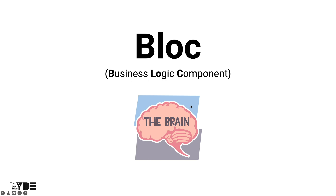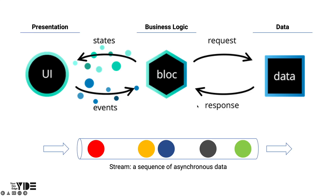Let's look at the structure of a typical app. The app consists of a presentation layer where users can see and interact, and a business logic layer that receives a user request — for example, show me the latest stock price — then makes a request to the data layer, processes the data received from the data layer, and delivers it to the presentation layer.